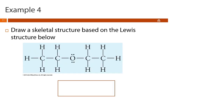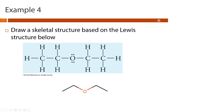Now draw a skeletal structure based on the Lewis structure shown for diethyl ether. Your result should look similar to the example shown — it doesn't have to be exact. For instance, you could start by drawing your first bond down then up; either approach works.